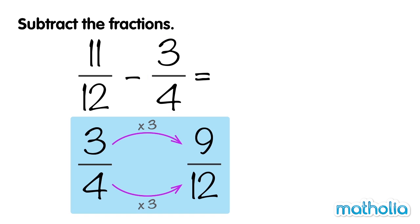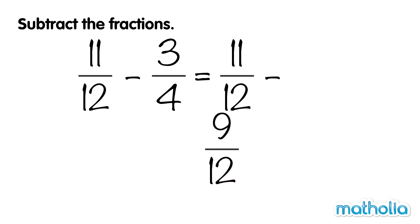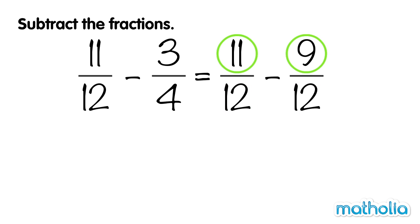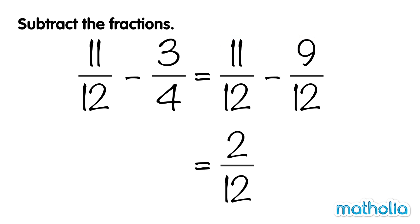So we can rewrite 11 twelfths minus 3 quarters as 11 twelfths minus 9 twelfths. The denominators are now the same — the fractions are like fractions. Let's subtract the numerators: 11 minus 9 equals 2. So 11 twelfths minus 9 twelfths equals 2 twelfths, and 11 twelfths minus 3 quarters equals 2 twelfths.